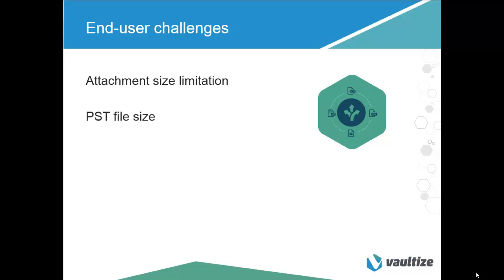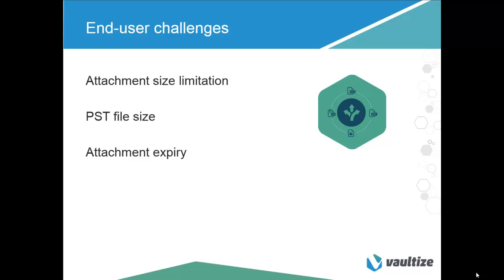PST file sizes are another issue — attachments contribute the most to the size of PSTs on user endpoints, and large PSTs slow down Outlook, making it difficult for users to work efficiently. Additionally, attachment expiry and revocation is a problem. If confidential or sensitive files are shared outside the organization by mistake, it is nearly impossible to revoke or block the attachments. In newer Exchange versions, one can revoke an entire message only if the receiver also uses an Exchange version that supports revocation. Also, one cannot set an expiry for an attachment in terms of number of accesses, downloads, or based on date and time.